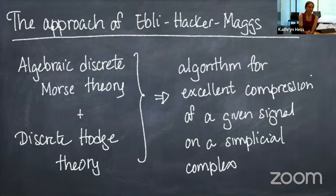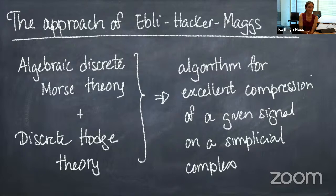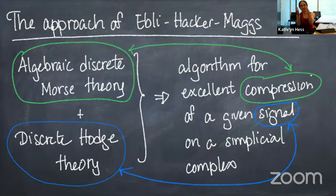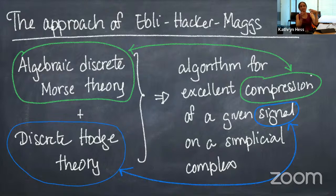Their approach used two complementary tools: algebraic discrete Morse theory and discrete Hodge theory. These are both discrete analogues of well-known theories coming from smooth manifolds. What they get from this is an algorithm that gives really good compression of a given signal on a simplicial complex. Discrete Morse theory is well known for compressing a large chain complex to a smaller one, while Hodge theory is well known for being useful in signals.